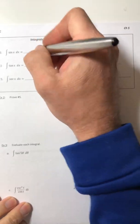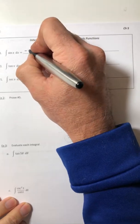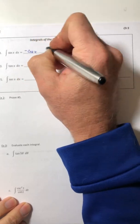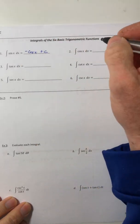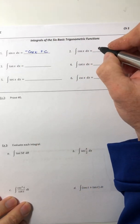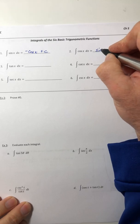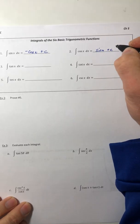So for integral of sine, we already have a formula for that one. Negative cosine of x plus c. And same for the integral of cosine, sine of x plus c.